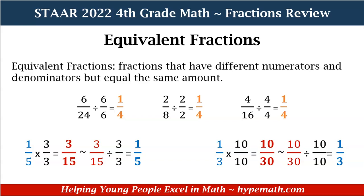Let's look at another equivalent fraction of one-fourth. We have two-eighths, which we covered previously. This time we divide by two over two — you must always divide or multiply the numerator and denominator by the same number. Two divided by two equals one, eight divided by two equals four, so two-eighths and one-fourth are equivalent fractions. Now let's look at four over 16 — dividing the numerator and denominator by four: four divided by four equals one, sixteen divided by four equals four, confirming one-fourth and four over 16 are equivalent.